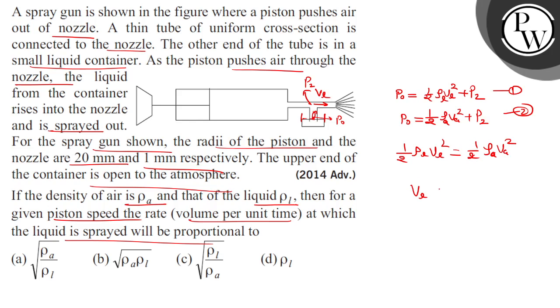So in this case, we can see the liquid in the nozzle. This will be the square root of rho_a upon rho_l into v_a. So this is what we can see, that this will be proportional to